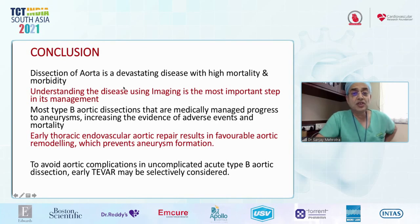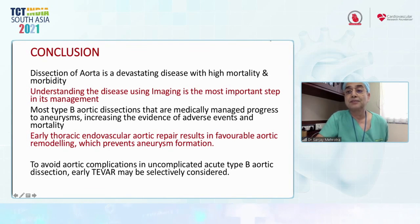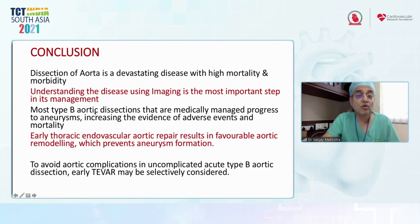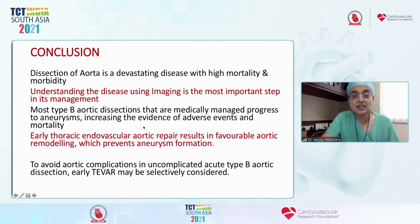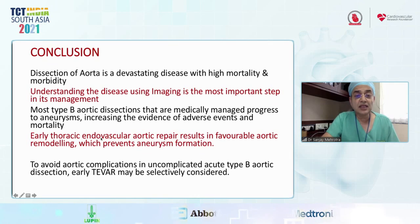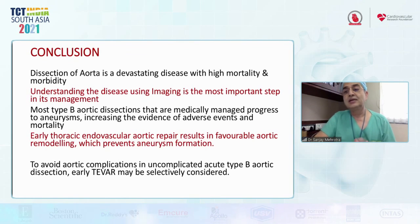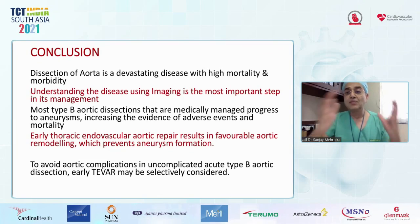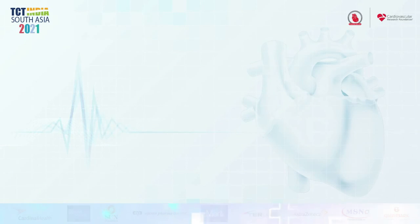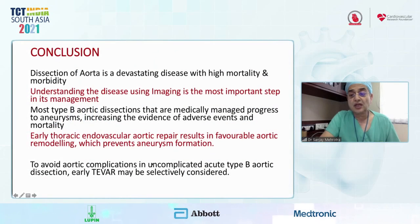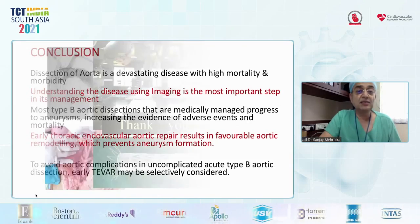In conclusion: aortic dissection is a devastating disease with high mortality and morbidity; understanding the disease through imaging is the most important step in management. Most type B aortic dissections managed medically progress to aneurysm, increasing adverse events and mortality. Early thoracic endovascular aortic repair results in favorable aortic remodeling. Extending the graft with a bare stent to approximate the false and true lumen improves remodeling. The recommendation is to cover the false lumen as completely as possible to ensure remodeling and avoid aortic complications. In uncomplicated type B dissection, early TEVAR may be selectively considered.